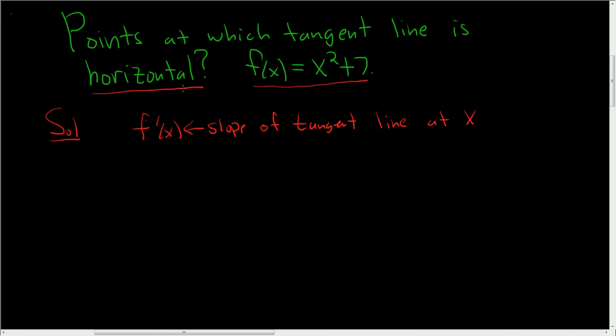We will have a horizontal tangent line when the slope of the tangent line is zero. So all we do is take the derivative and set it equal to zero.